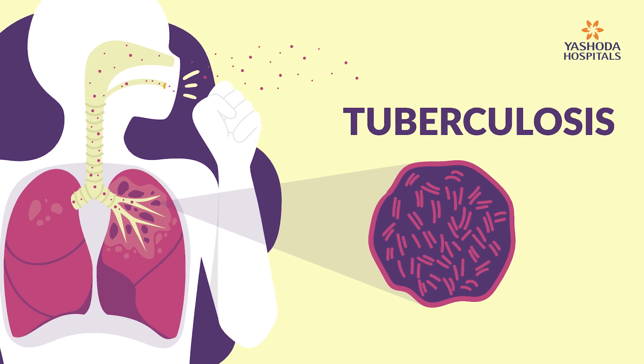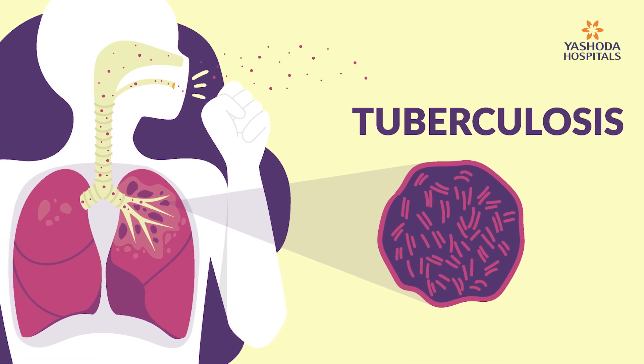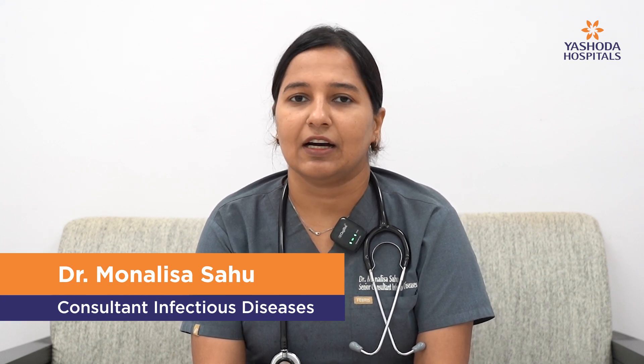Tuberculosis is caused by the bacteria Mycobacterium tuberculosis. It can involve various organs — the most common being the lungs, known as pulmonary tuberculosis, and extra-pulmonary organs, known as extra-pulmonary tuberculosis. The various organs affected include the lymph nodes, the spine, the bones, even the brain, the reproductive organs like the ovary, uterus, and prostate, abdominal organs like the liver, spleen, and intestines, and even the skin and the heart.